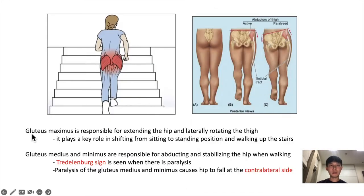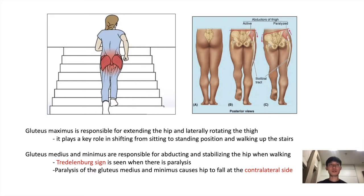Clinically, the gluteus maximus is the key muscle responsible for extending the hip and laterally rotating the thigh. It plays a key role in shifting from sitting to standing position, walking up the stairs, and going from a squatting position to standing up. If your gluteus maximus muscles are weak, it'll be difficult to go from a sitting position to a standing position.